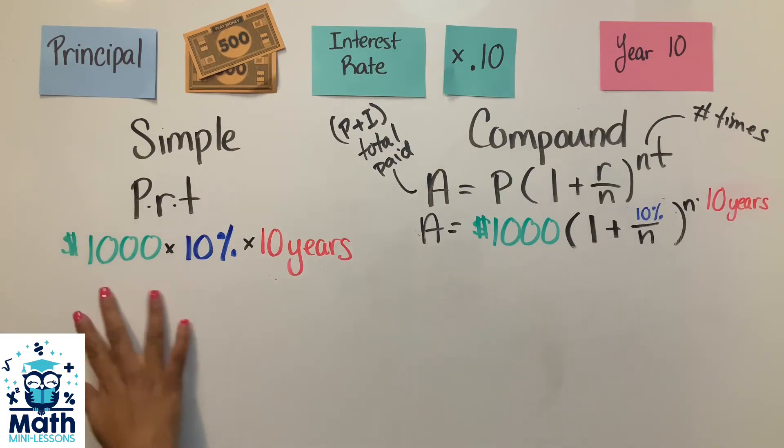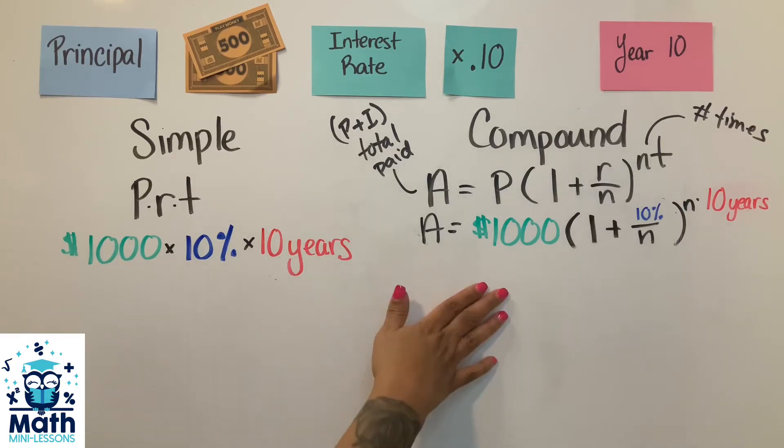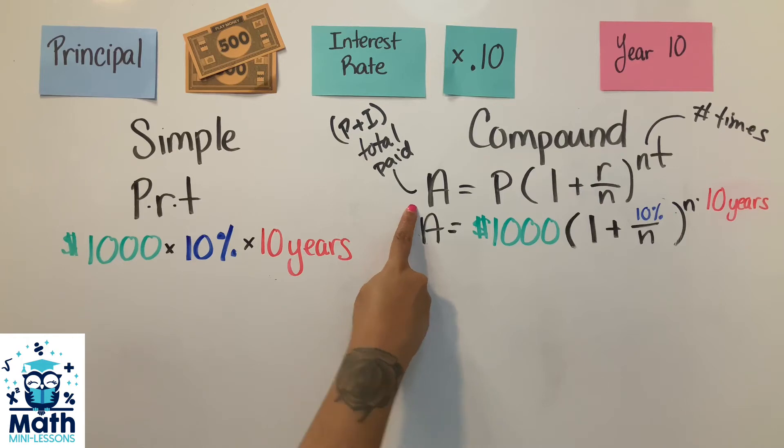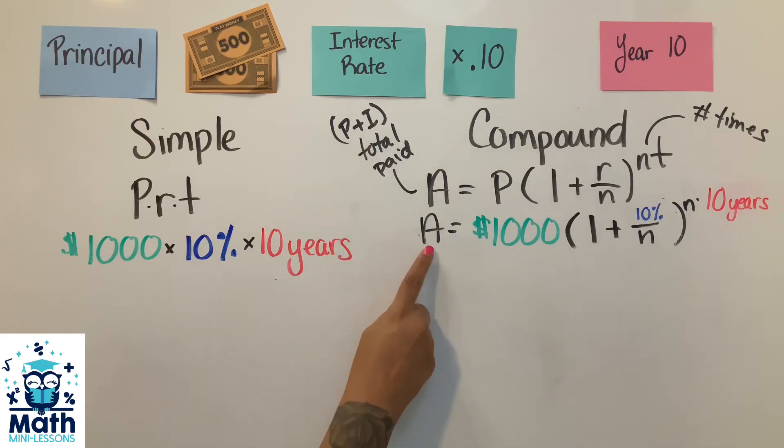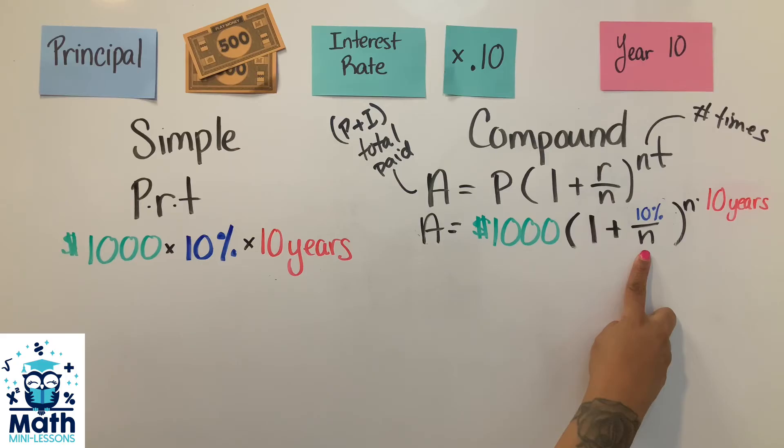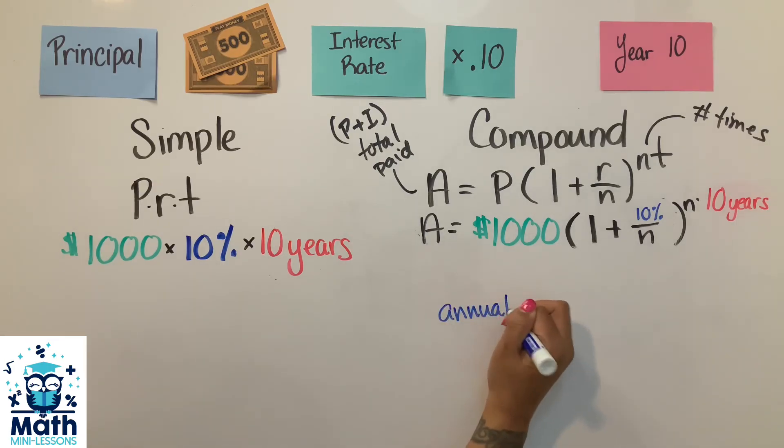There are two variables in compound that you don't see in simple, and that is the A and that is the n. With the A, this is pretty much figuring out everything you pay over those 10 years - all the principal, or all the money that you borrow, plus all the interest that you've accumulated. That's going to give us this A. And for this n, this tells us in some cases there's situations where you might be charged interest more than once a year. So for example, if it's annually, that means you pay like one time a year - that 10% happens one time a year, so it's just 10% once a year.